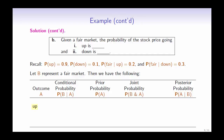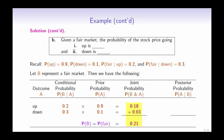For the outcome that the stock price goes up, we have the conditional probability 0.2 times the prior probability 0.9, which gives us the joint probability 0.18. For the outcome that the stock price goes down, we have the conditional probability 0.3 times the prior probability 0.1, which gives us the joint probability 0.03. Adding up the two joint probabilities, we have 0.21, the probability of a fair market.